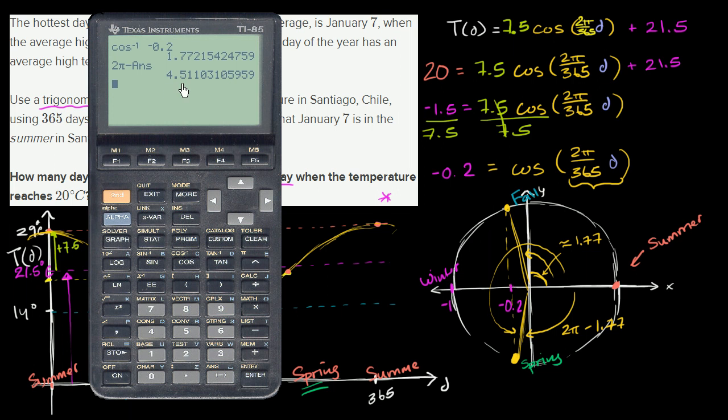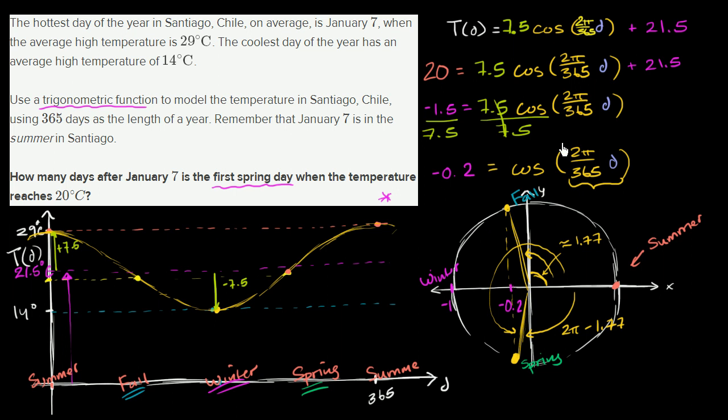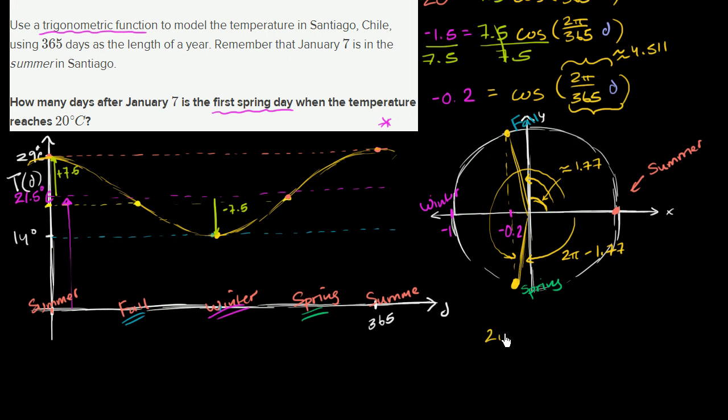Now we're not done yet. That's just the angle. That's the argument that we need to give in here to get to that point. But what's the days going to be? Well, 2π over 365 days is going to be equal to this number, 4.511. So this right over here is going to be approximately equal to 4.511. So we can say 2π over 365 times the days after January 7th is approximately going to be equal to 4.511.